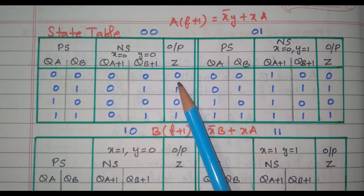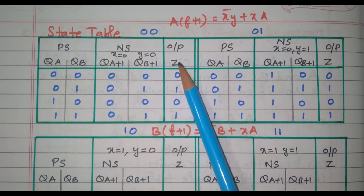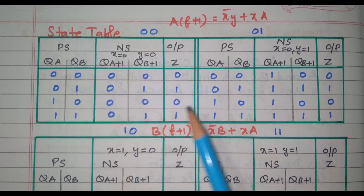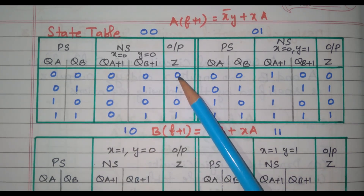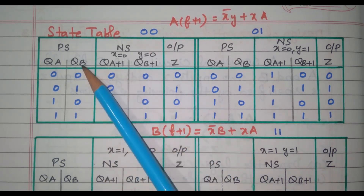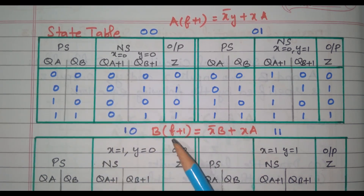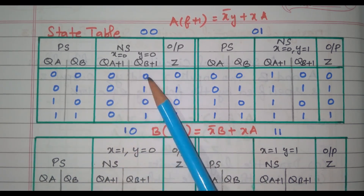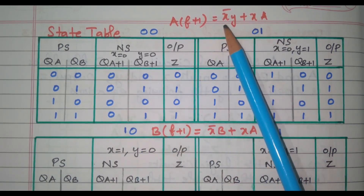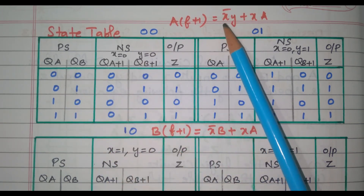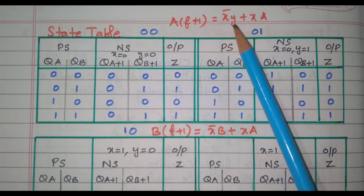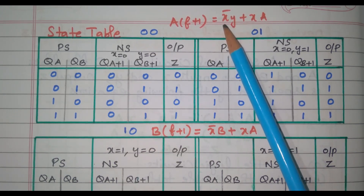Now we will see the next state when QA=0, QB=0, X=0, Y=0. X-bar·Y: X is 0 so X-bar will be 1, Y is 0, so 1 into 0 equals 0. X into A: X is 0, A is 0, so 0 into 0 equals 0. Therefore A(t+1) = 0 plus 0 = 0. Similarly B(t+1) = 0. So next state is 00.